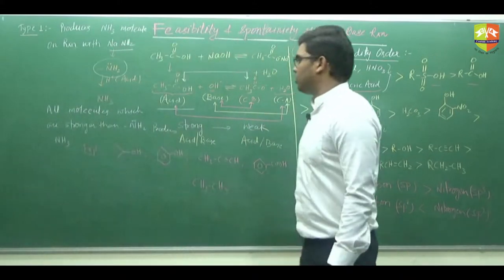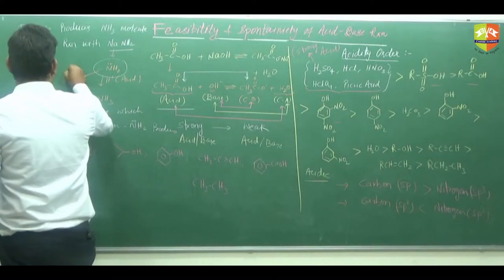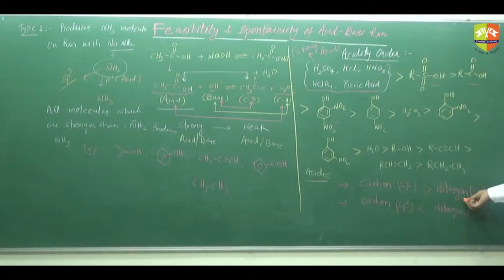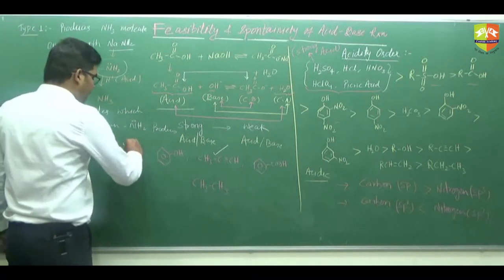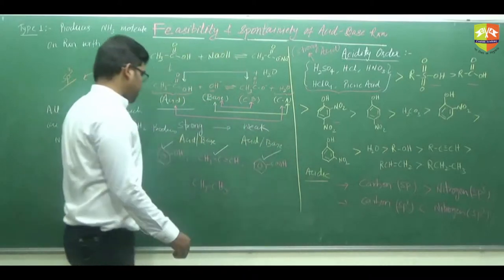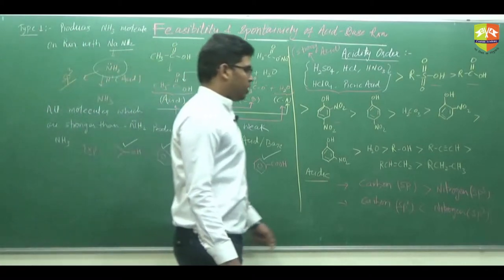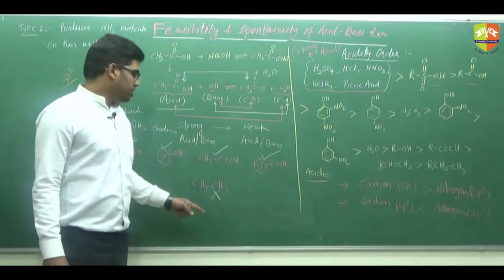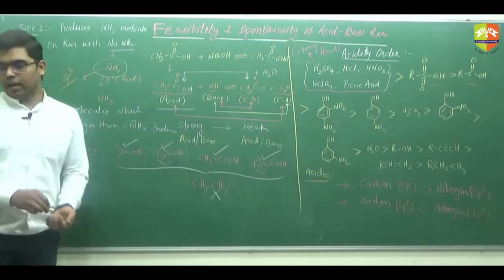SP-hybridized carbon is more acidic than SP3-hybridized nitrogen, so alkyne will produce NH3. Alcohol is more acidic than amines, and carboxylic acid is also more acidic than amines. But alkane has SP3-hybridized carbon, which is even less acidic than SP3-hybridized nitrogen, so that is not possible. So in this example, alcohol, phenol, alkyne, and carboxylic acid produce NH3 on reaction with NaNH2.